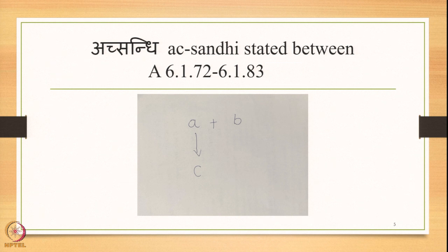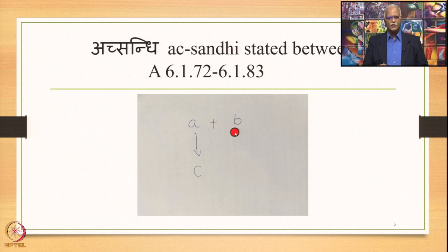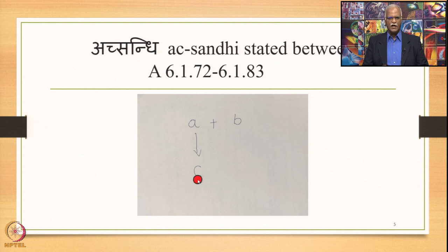This is the diagrammatic representation of the Ekasthanika Ekadesha type of Ach Sandhi, stated between 6.172 to 6.183. We have A plus B and A is substituted by C. B remains as it is. So A plus B is the input and C plus B is the output. A is the substituent, C is the substitute — this is the Sthani, this is the Adesha: Ekasthanika Ekadesha.